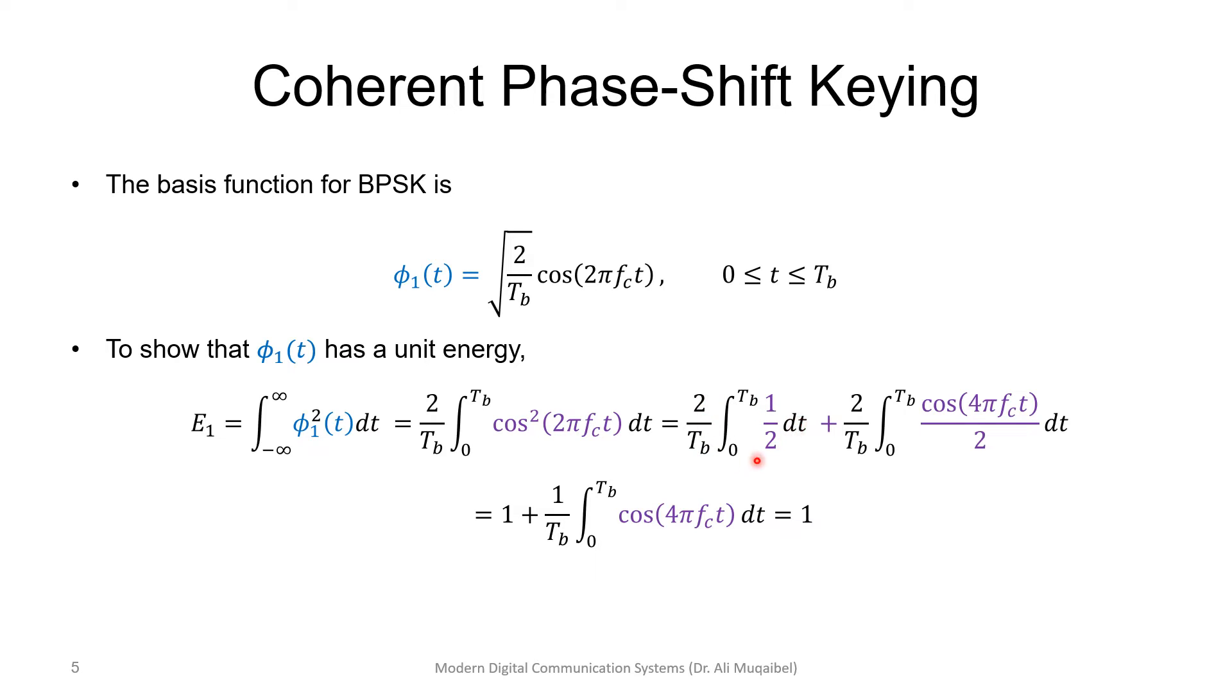this is going to give you a constant, which is 1. Since this is 0, I have ended up with 1, which is expected because this is normalized basis, the energy equal to 1. We just have proven this.